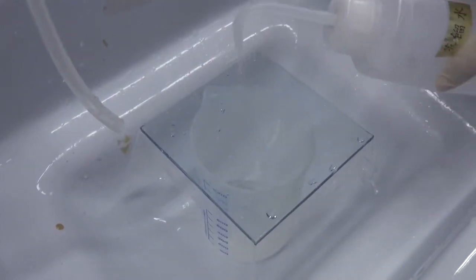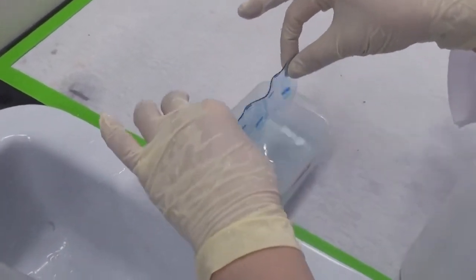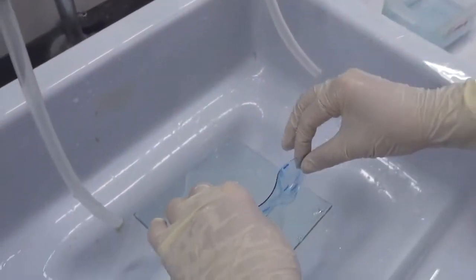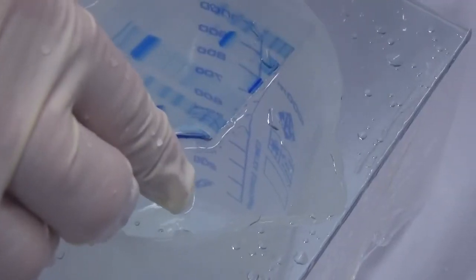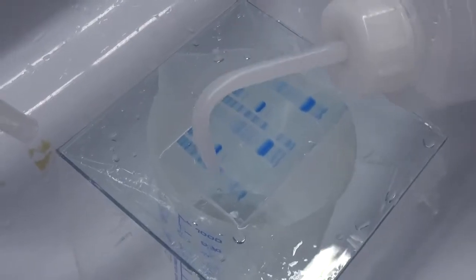Drop some water on the food wrap. Carry the gel by hand and slowly lay it flatly on the food wrap with care. Avoid bubbles between the gel and food wrap. Add some more water around the gel.